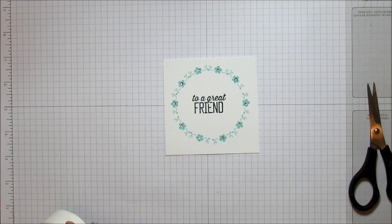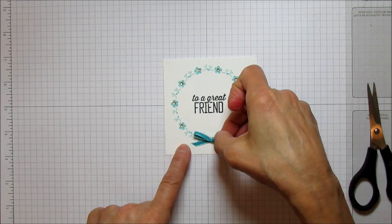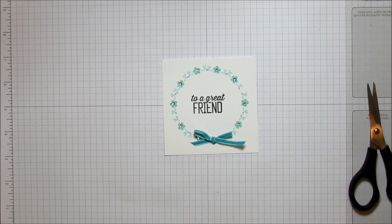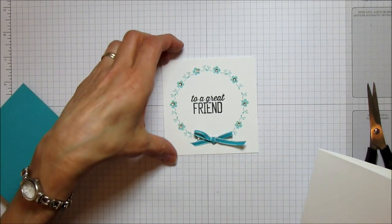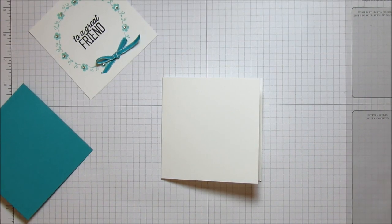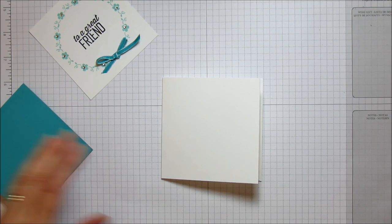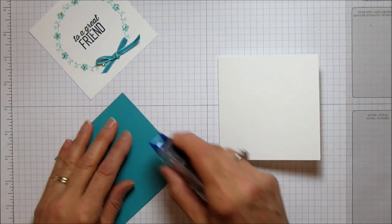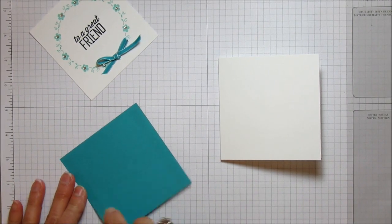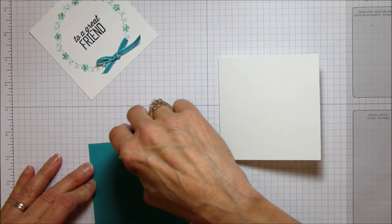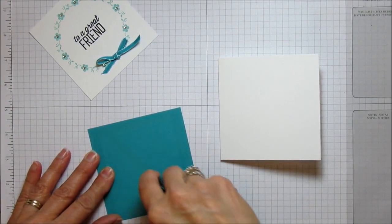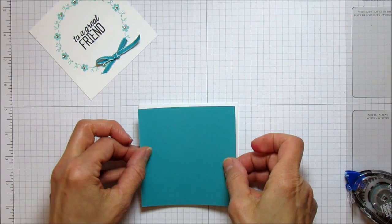A good thing to do with this card since it's a different shape is you can make your own envelope with the envelope punch board. I should have done that for you—I could have put a little stamp on the outside of the envelope; it would be really cute with a flower.